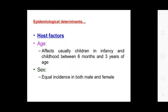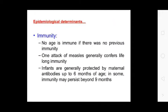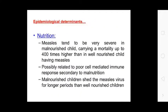Host factors: age — the disease usually affects children in infancy and childhood between six months and three years of age. Sex — equal rates in both male and female. Immunity — there is no immunity if there is no previous exposure; one attack of measles generally confers life-long immunity. Infants are generally protected by maternal antibodies up to six months of age, and in some cases immunity may persist beyond nine months. Measles tends to be very severe in malnourished children, carrying mortality up to 400 times higher than in a well-nourished child, possibly related to poor cell-mediated immune response secondary to malnutrition.